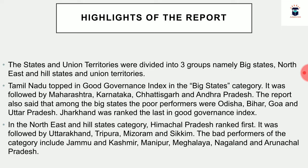Tamil Nadu topped the Good Governance Index in the big states category, followed by Maharashtra, Karnataka, Chhattisgarh, and Andhra Pradesh. Among big states, poor performers were Odisha, Bihar, Goa, and Uttar Pradesh, with Jharkhand ranked last. In the northeast and hill states category, Himachal Pradesh ranked first, followed by Uttarakhand, Tripura, Mizoram, and Sikkim. Poor performers in that category included Jammu & Kashmir, Manipur, Meghalaya, Nagaland, and Arunachal Pradesh.